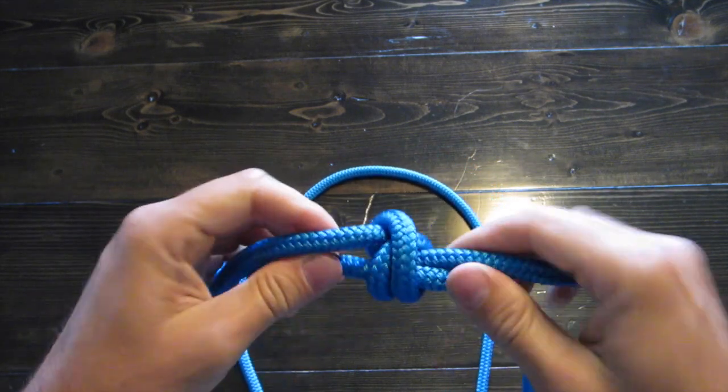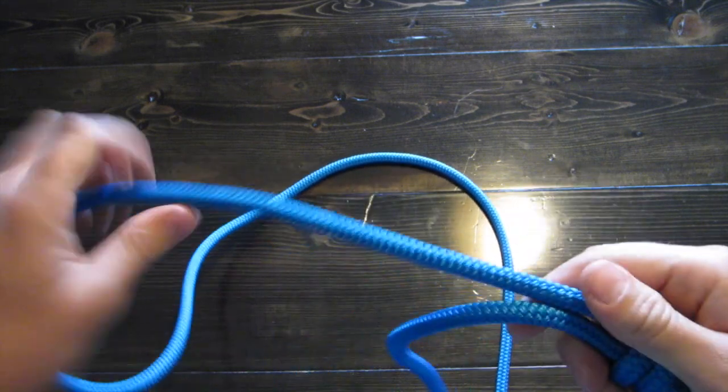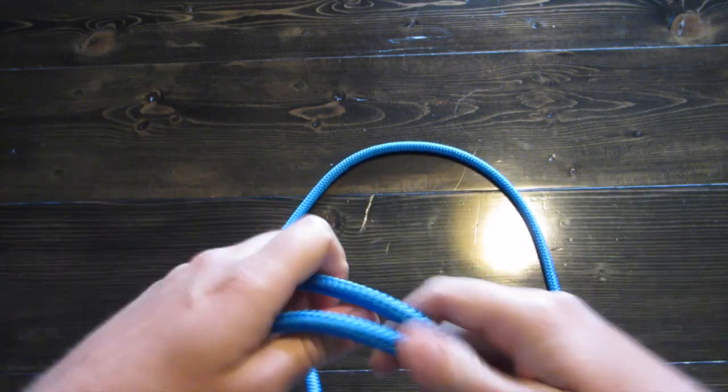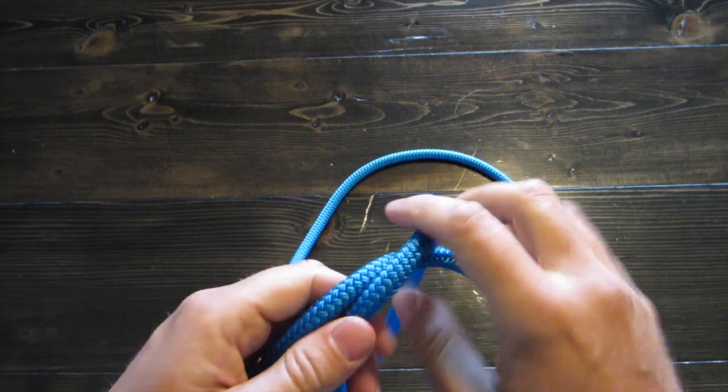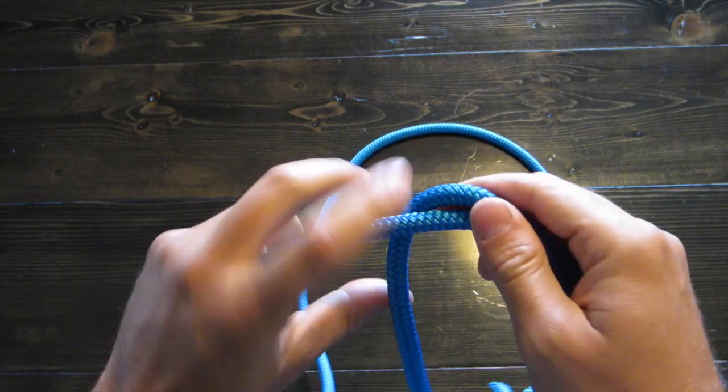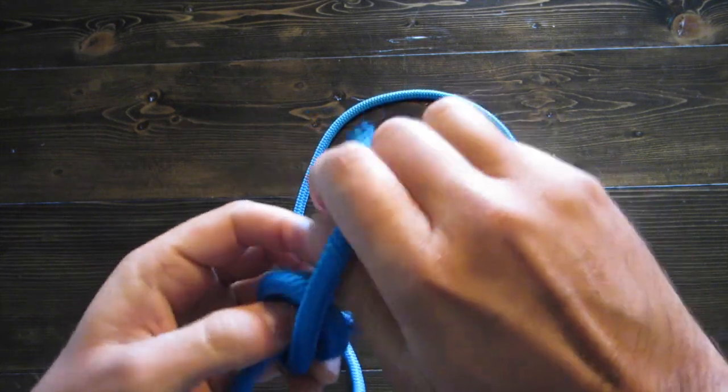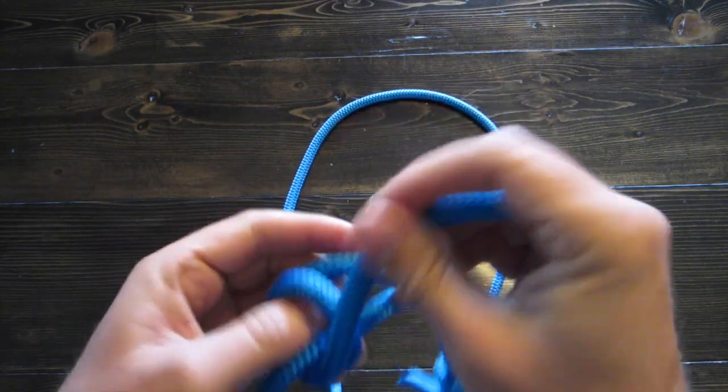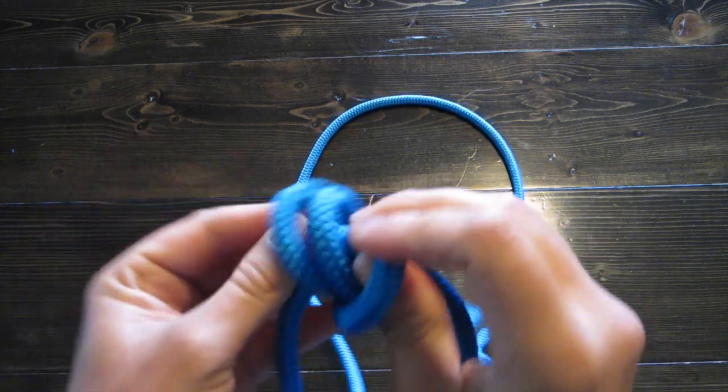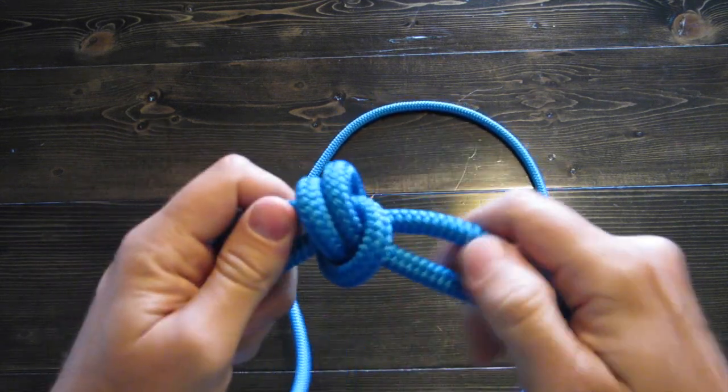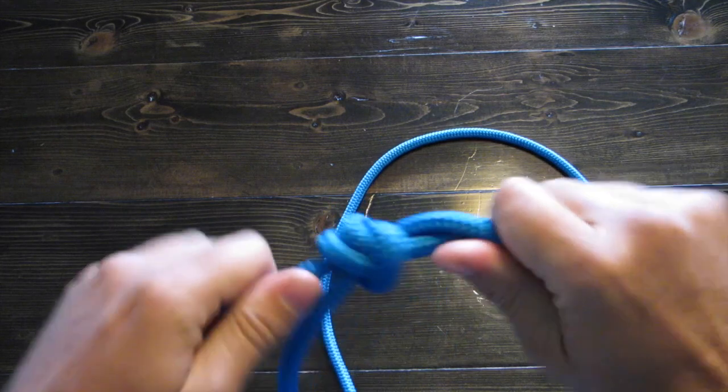That looks good. Okay. And you're gonna do the same thing over here. And you can always pull a little more slack through if you need to. And, there you go. You make a couple loops. And you bring this end, the tail, through. And, dress it.